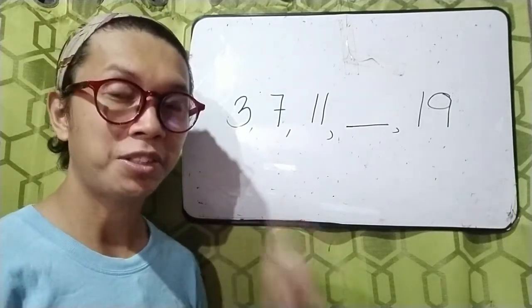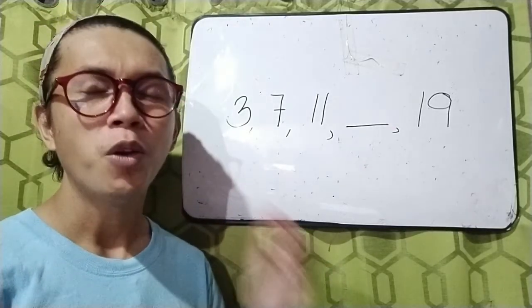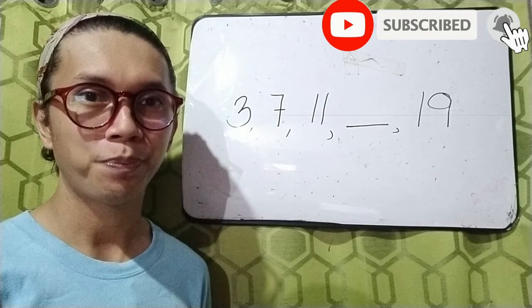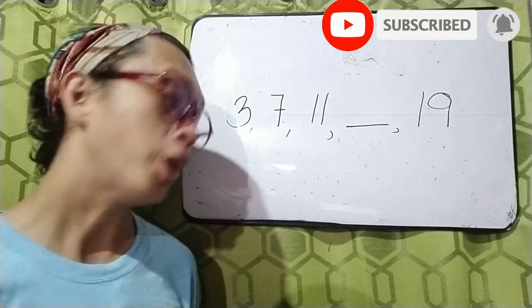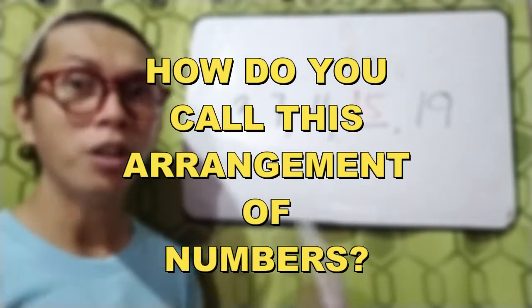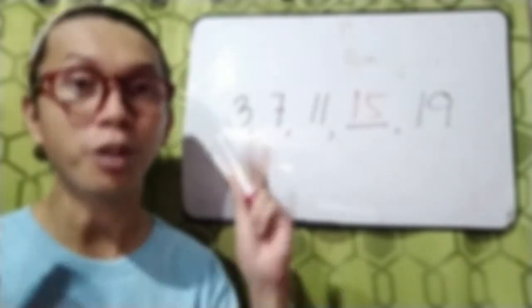Given the order of numbers 3, 7, 11, and blank, and 19, what is the missing number? If your answer is 15, then you got it right. So now my question is, how do you call this arrangement of numbers? Let's talk about it in this new learned video.